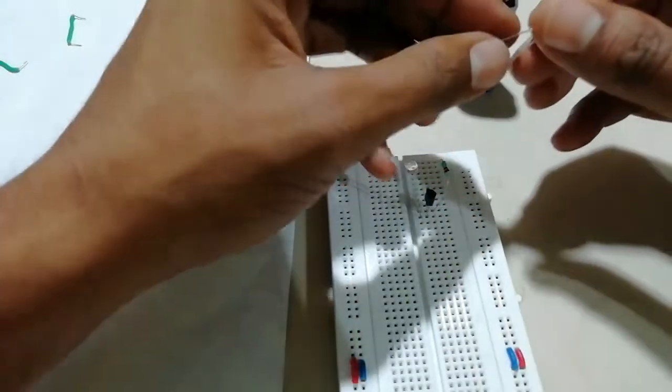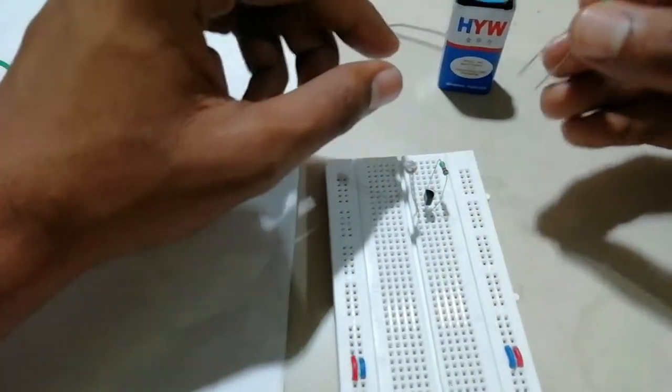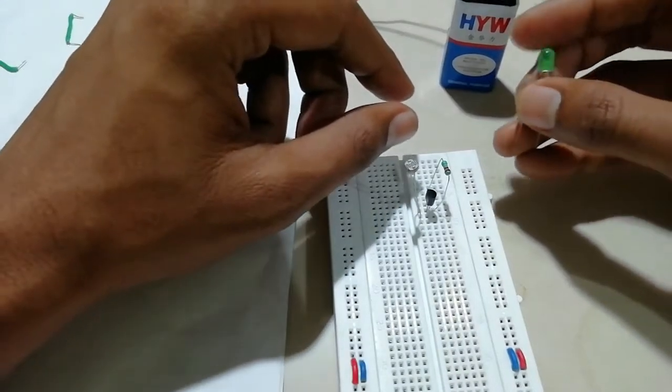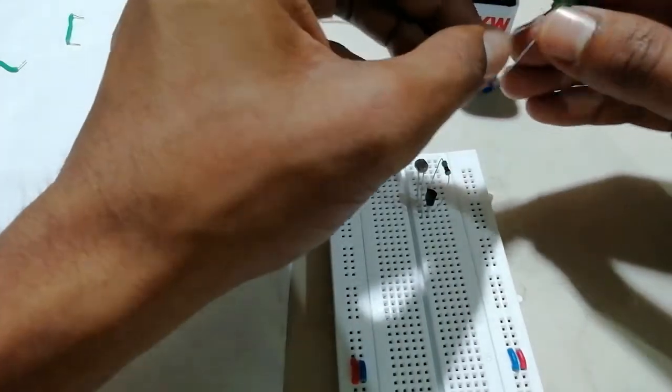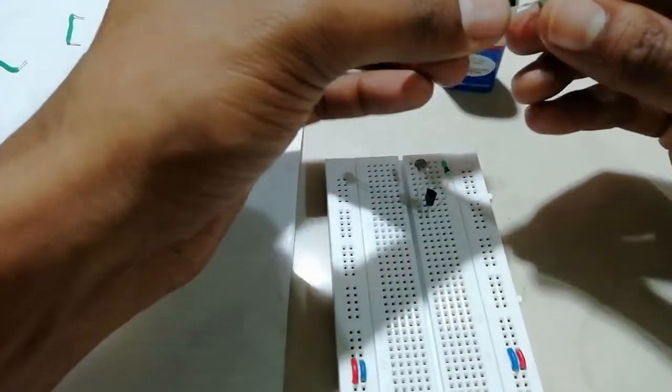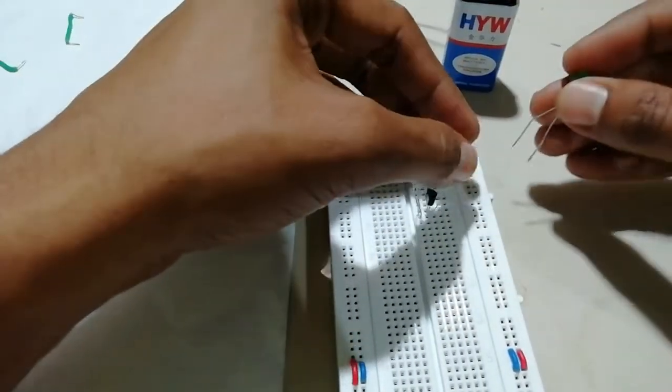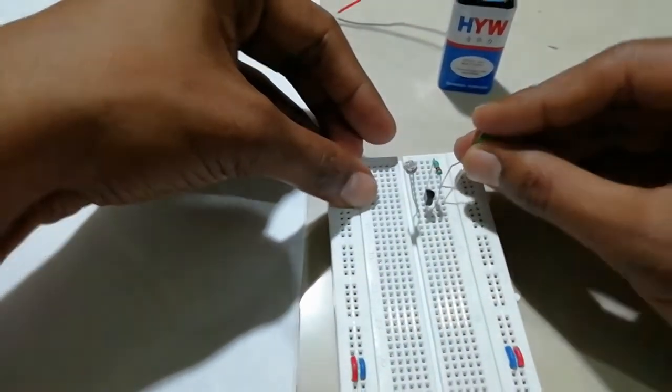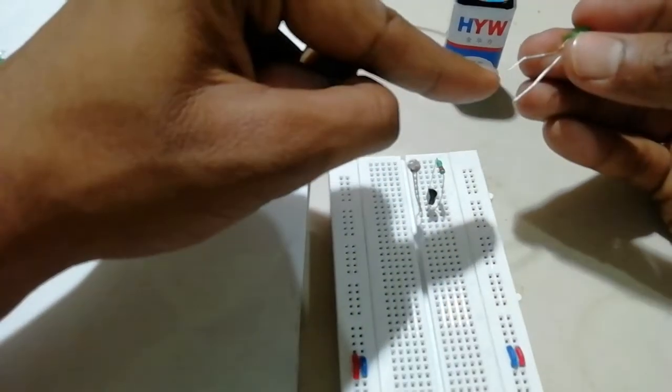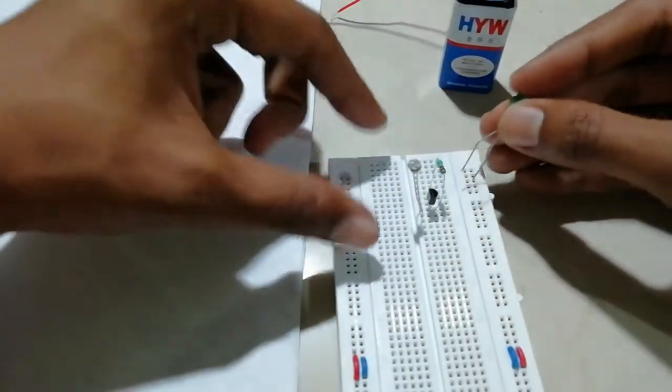Now we will connect our LED. Positive we have to connect to resistor and negative we will be connecting to collector of this transistor. The lengthier lead is positive, smaller lead is negative.